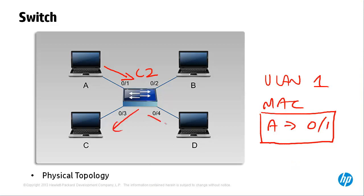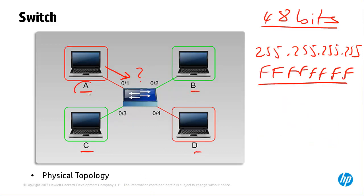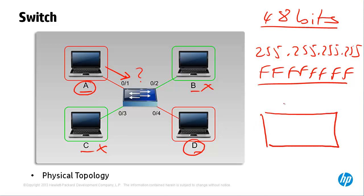The switch will then flood the MAC address out of all ports except the port on which it was received, so C, D, and B would receive that broadcast. However, in this example A is in the red VLAN, as is D, while C and B are in the green VLAN. The switch will make a note in its MAC address table that A is on port 01.